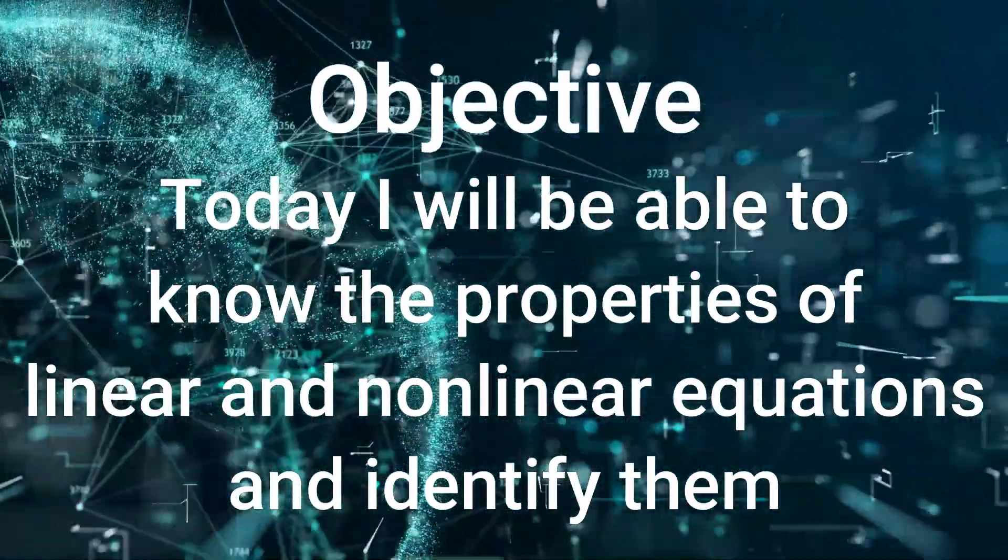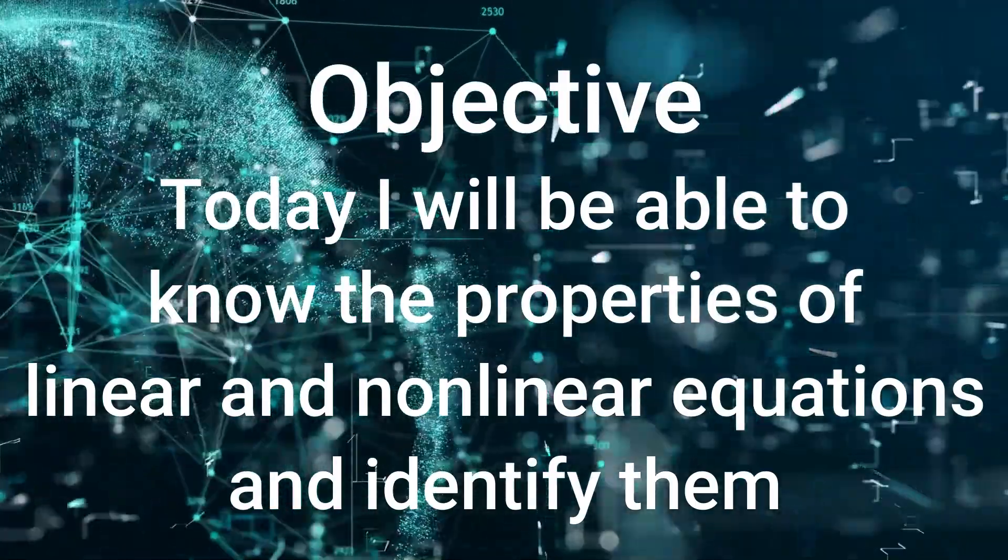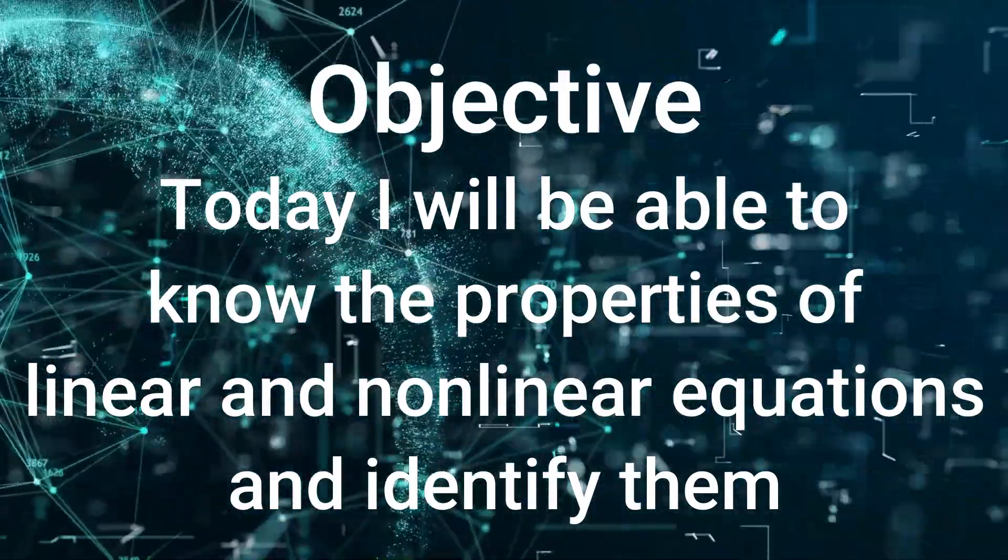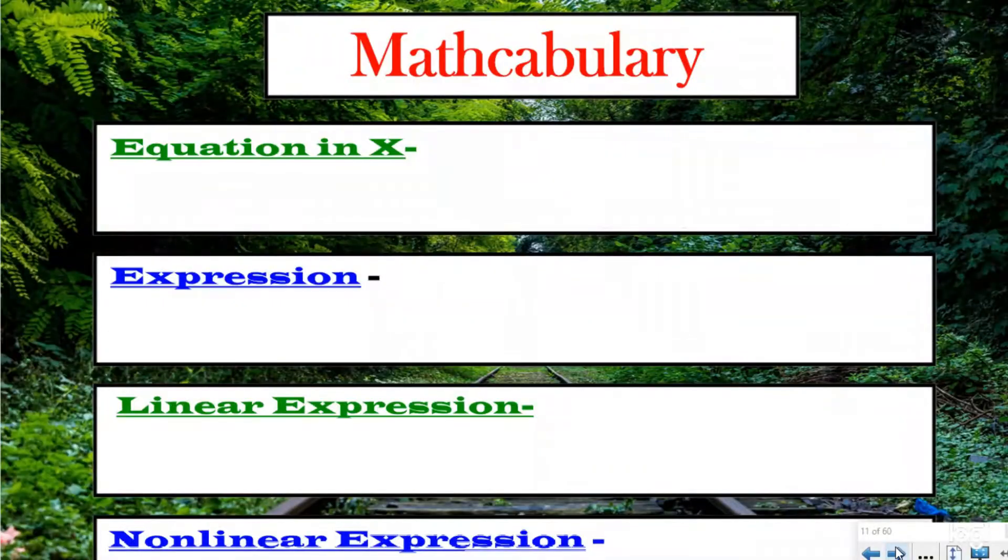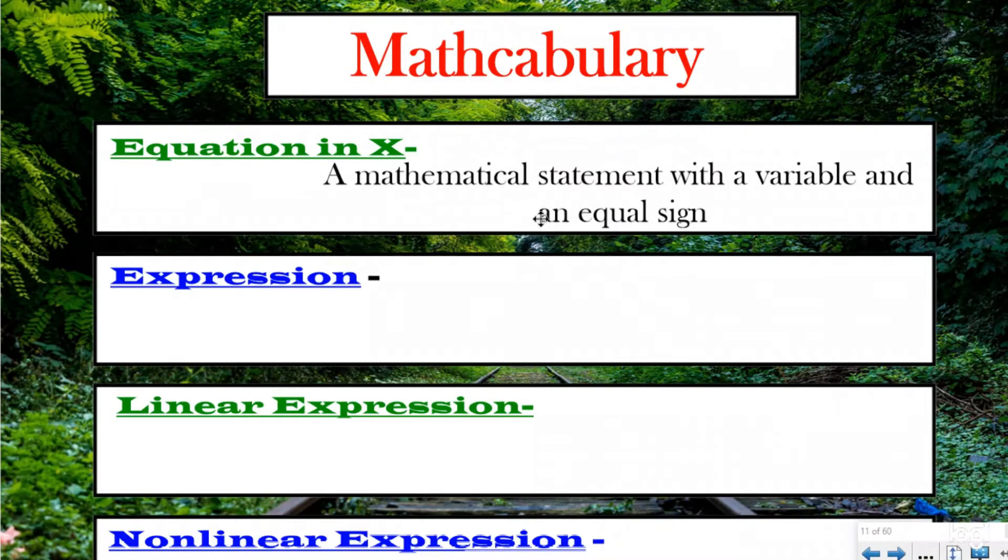Some of you might be wondering what the heck does linear and nonlinear mean, which leads us directly into our math vocabulary. First is equation in X. An equation in X is a mathematical statement with a variable, and that variable is going to be an X, and then also an equal sign. Basically, we're looking at an equation written with a variable as in X.